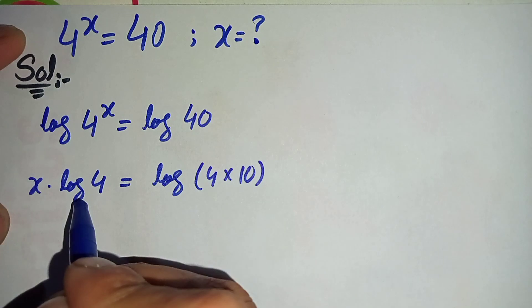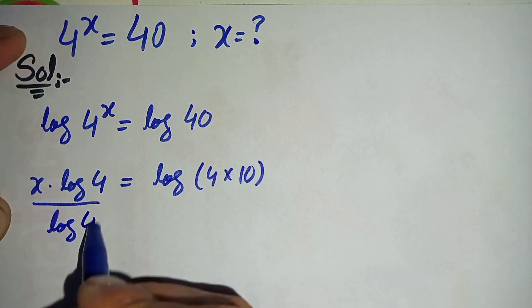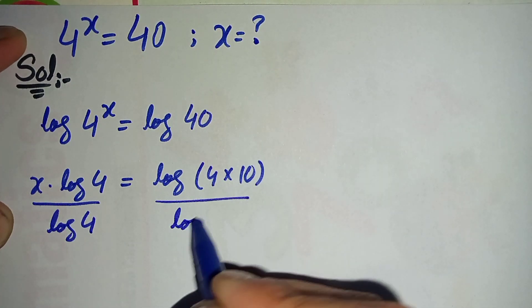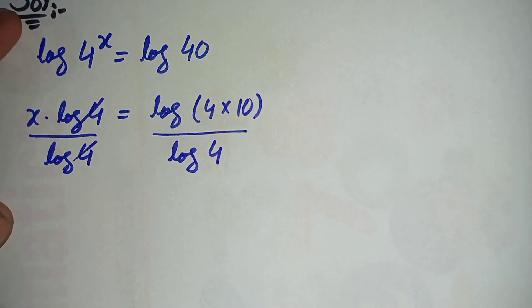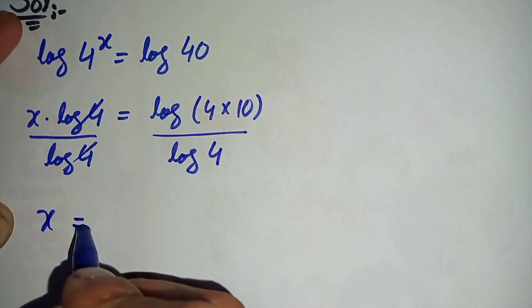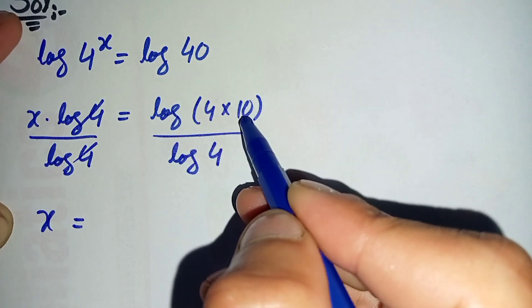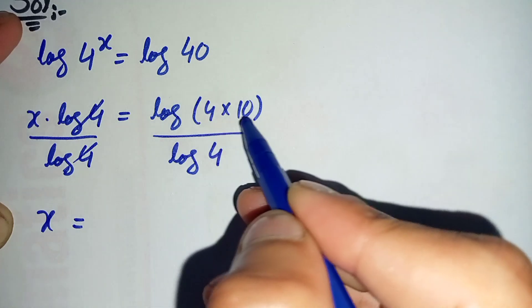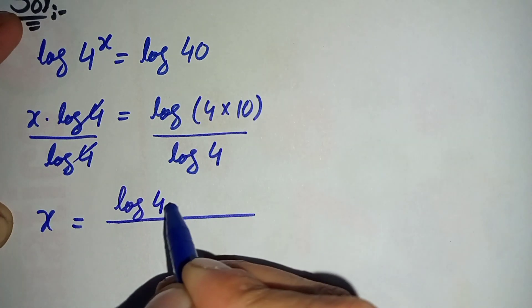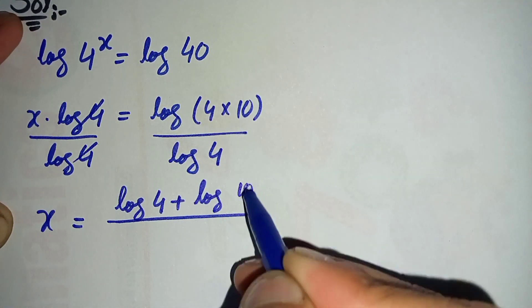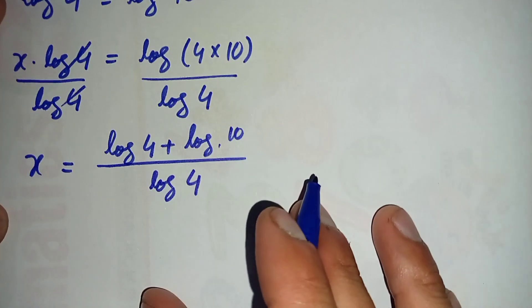Next, we will divide both sides by log of 4 to eliminate it from the left hand side. On the left, log of 4 cancels, leaving only x. On the right, we use the log property that log(a × b) = log a + log b, so the numerator becomes log of 4 plus log of 10, all divided by log of 4.